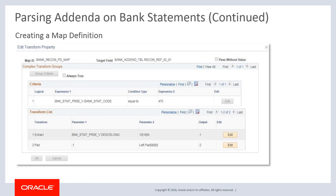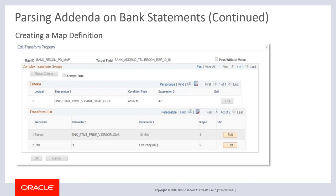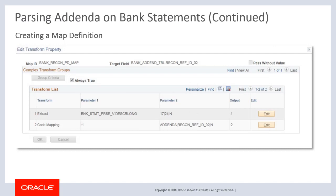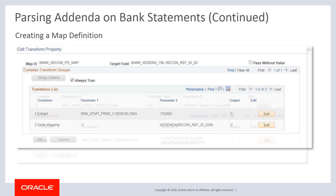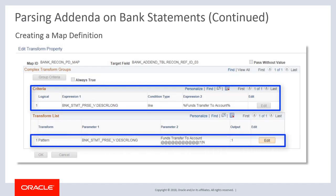Use the Complex Transform type to define a series of transformation actions executed when specified conditions are met, allowing users to specify criteria and apply transformations using runtime variables. In the first example, the Complex Transformation Rule extracts addenda values in position 10 to 16 for statement lines with bank statement code 475 and pads with 0 on the left to return 8-character strings. In the second example, it extracts addenda values in position 17 to 24 for all statement lines and substitutes them with corresponding internal PeopleSoft codes. In the third example, it looks for statement lines matching filter criteria and extracts addenda values that match a pattern.